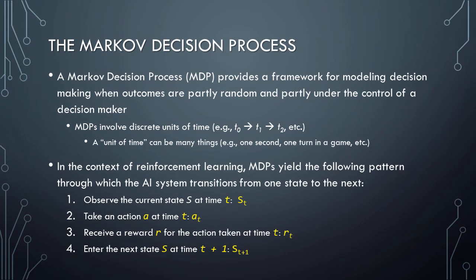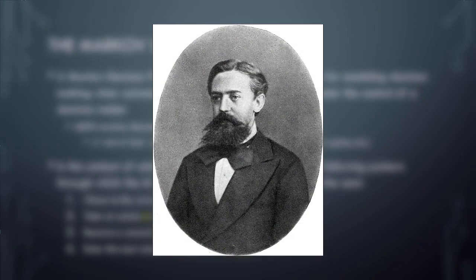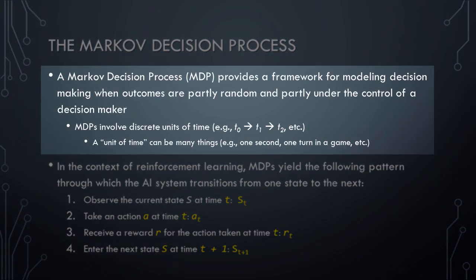The fourth element of reinforcement learning systems is the Markov decision process, or MDP, which is named in honor of the Russian mathematician Andrei Andreevich Markov, who did pioneering work on stochastic processes. Markov decision processes provide a mathematical framework for modeling decision making in situations where outcomes are partly random and partly under the control of the decision maker. In the case of reinforcement learning, the decision maker is the AI system operating in the environment. Markov decision processes involve discrete units of time — for example, time 0, time 1, time 2, etc. Time can be many different things: a unit of time might refer to one second, one turn in a game, one frame in a video, and so on.